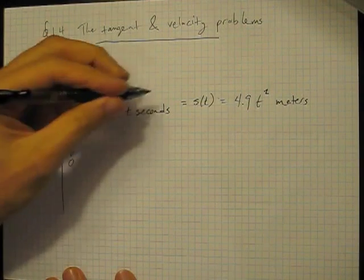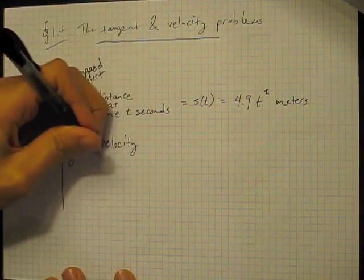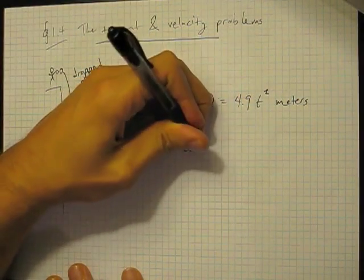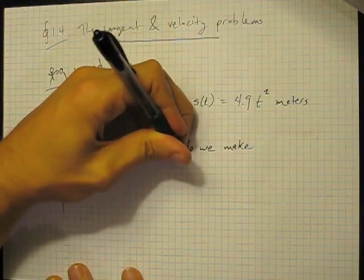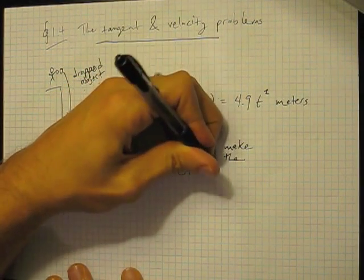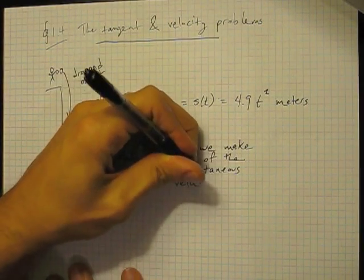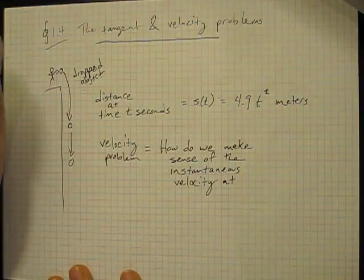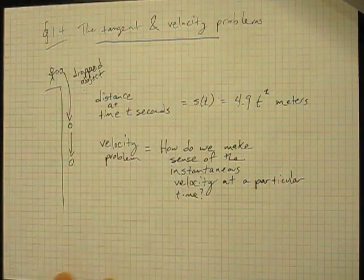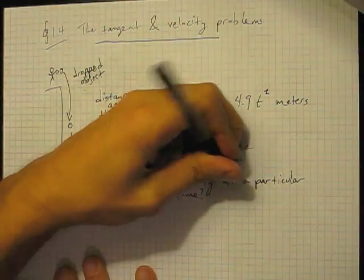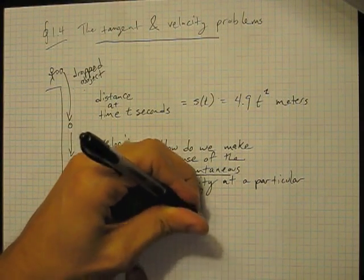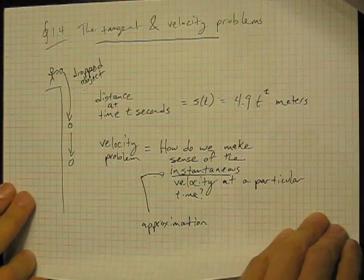And so the velocity problem is just this. It's the question of how do we make sense of what's called the instantaneous velocity at a particular time. We'll pick a particular time in just a minute. And the way that we make sense of this word instantaneous, which is the key, the way that we make sense of this is through approximation. Approximation is really the heart of calculus. So I'm going to talk a little bit about what that means.